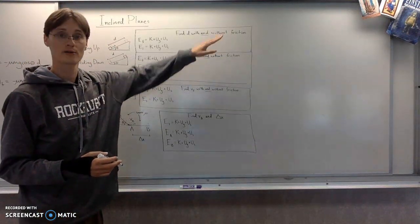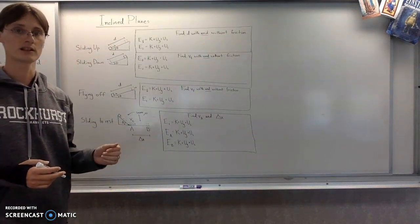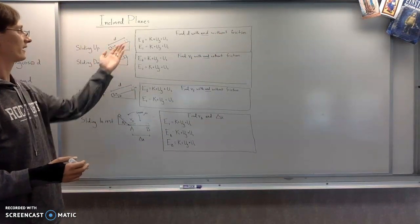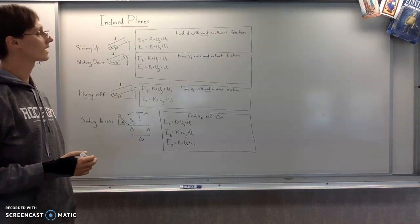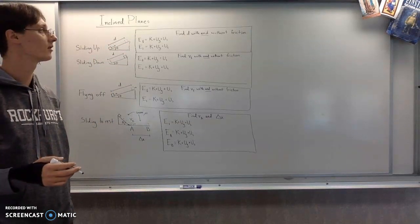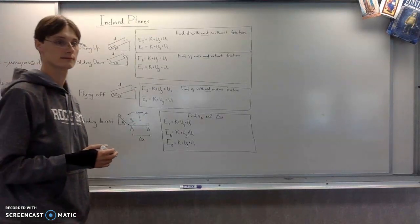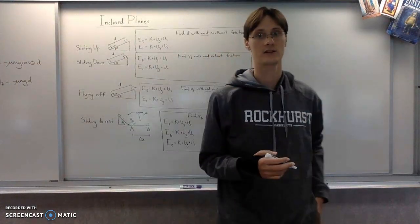Okay, so let's see if you can follow that format. Do first without friction, right? Delta E equals zero. Figure out the initial energy and the final energy, and then set it up. And then also do with friction once you feel like you've got that under control. So pause the video, figure it out.